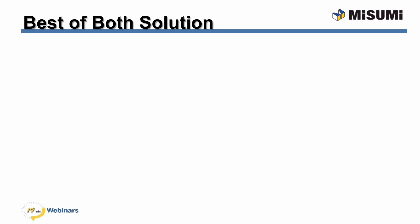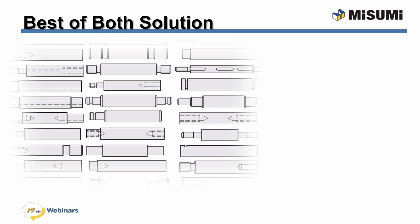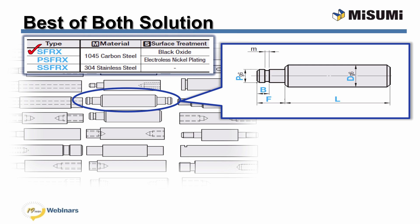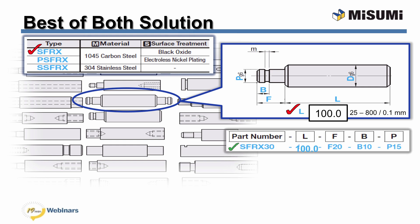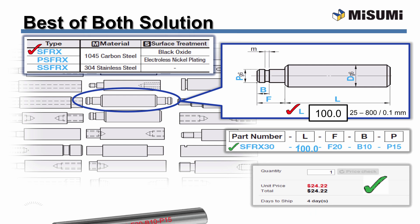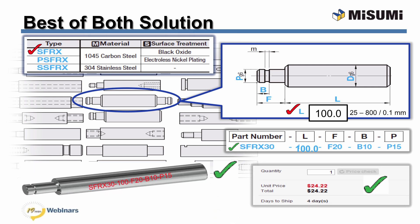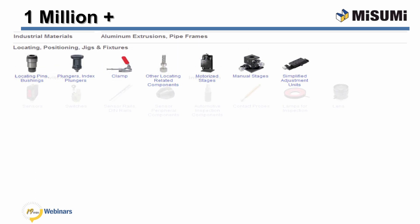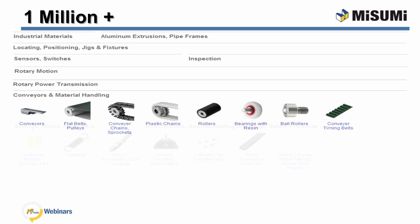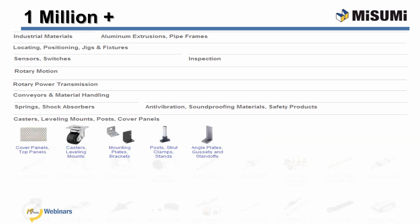Configurable components are easy to design with and purchase. Online, select the product geometry desired, the material and surface finish, and input the size for each configurable dimension within the range and increments shown. You'll get a smart part number, instant price and days to ship, and the CAD model. All of this configurability is available with our over 1 million components available at MisumiUSA.com.